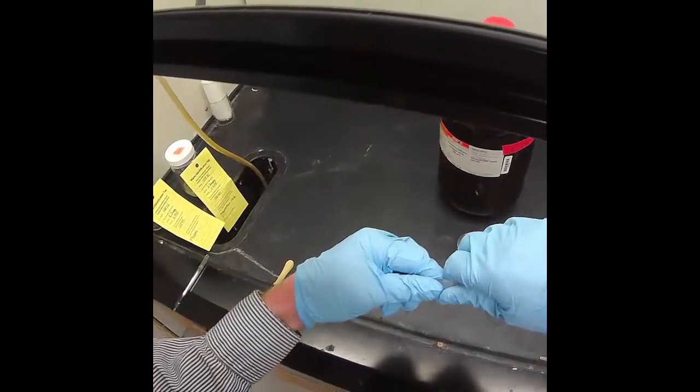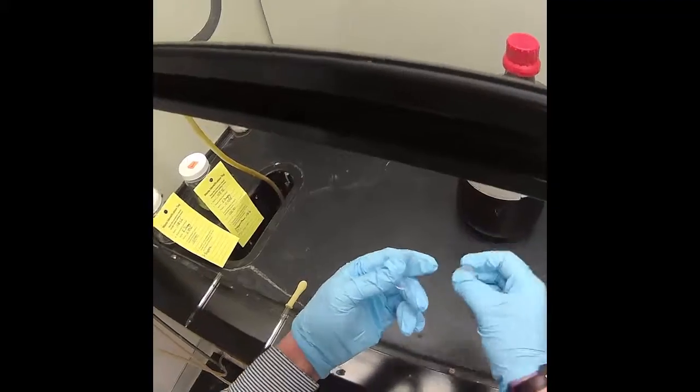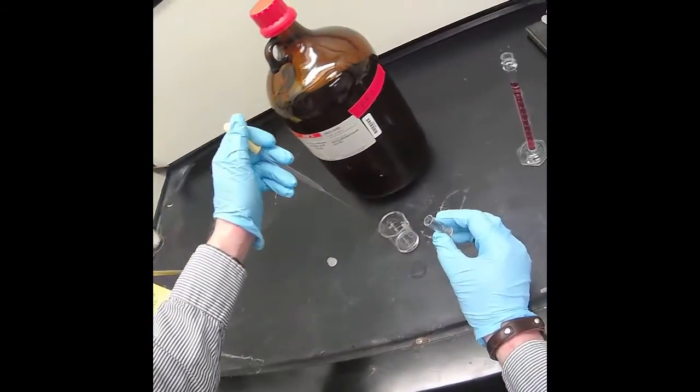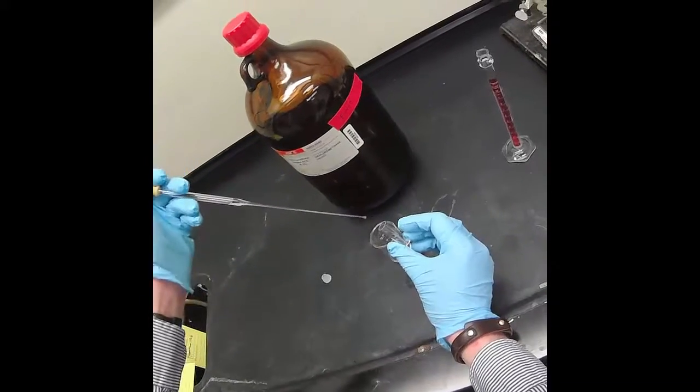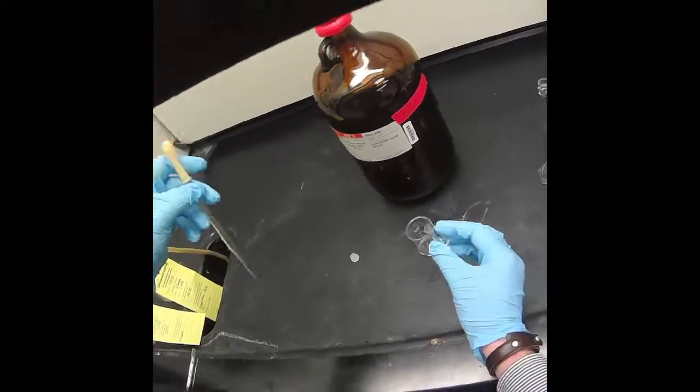So here I have some of my polymer solid. And I'll just add a little bit of dichloromethane so that it dissolves to make a homogeneous solution.